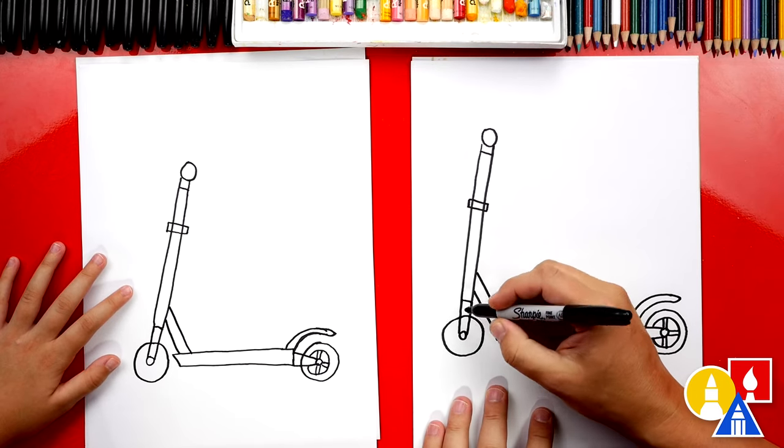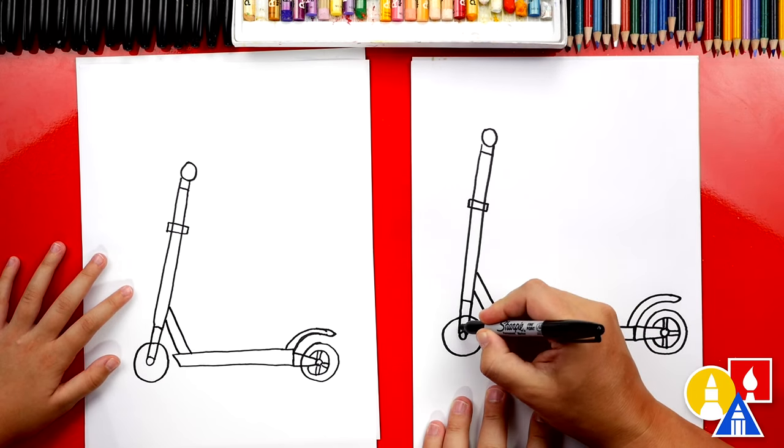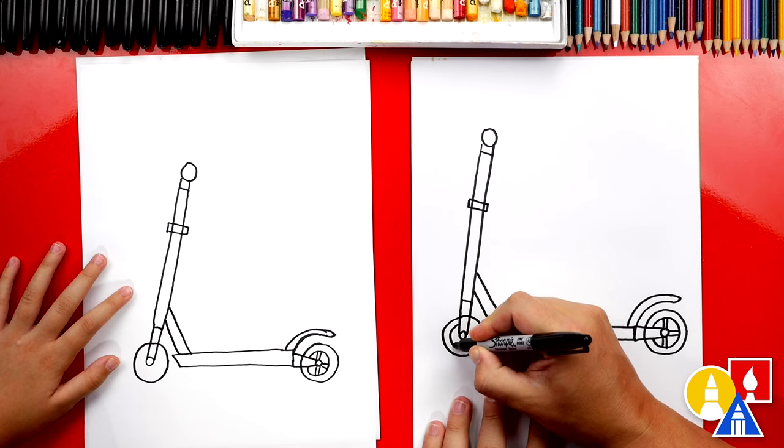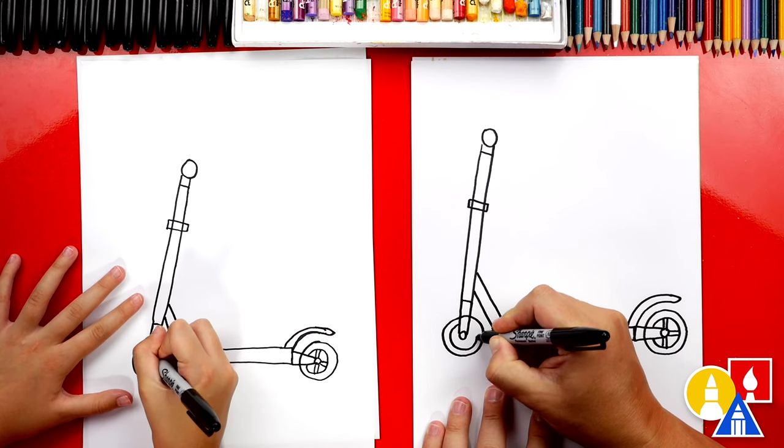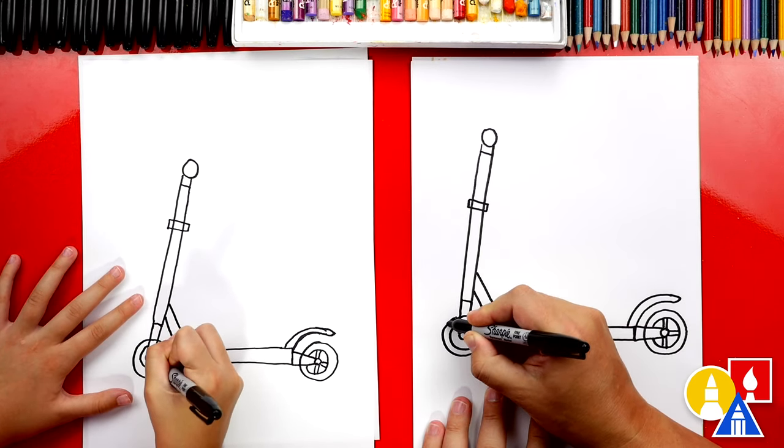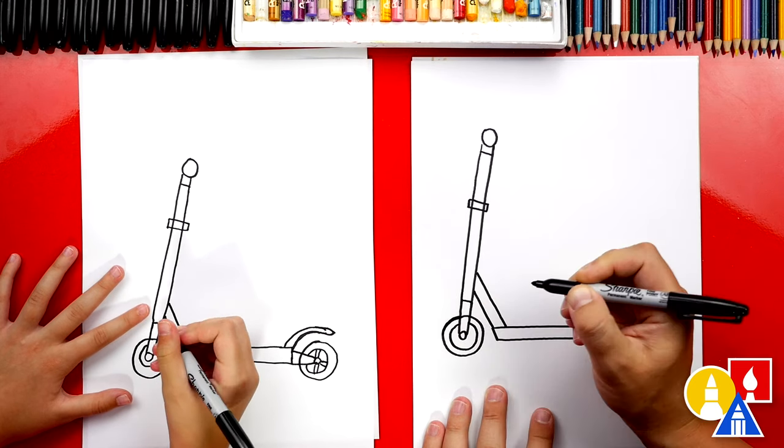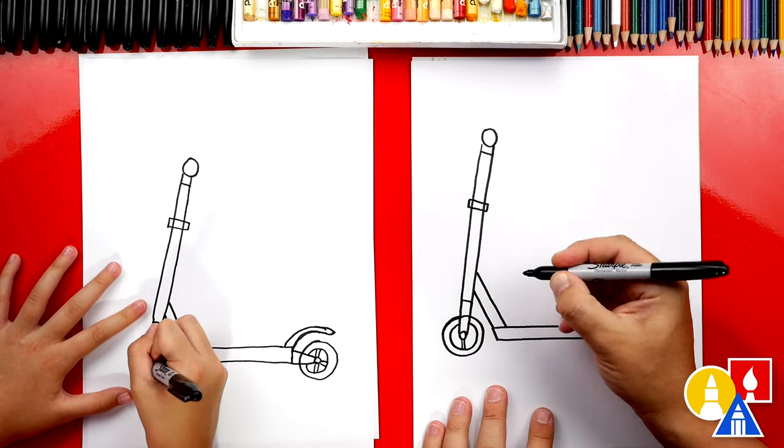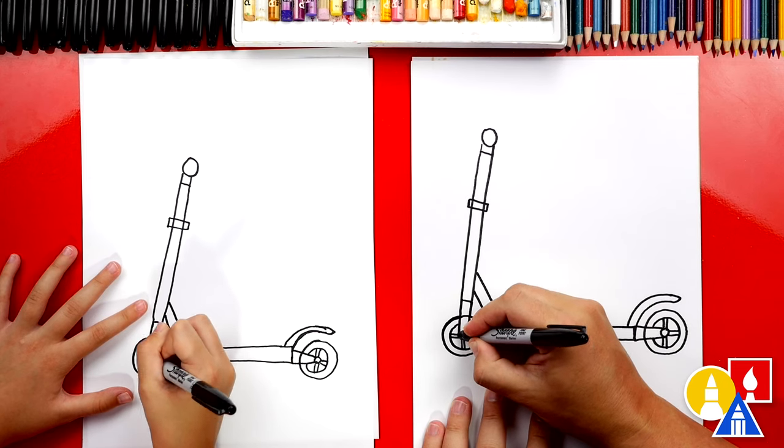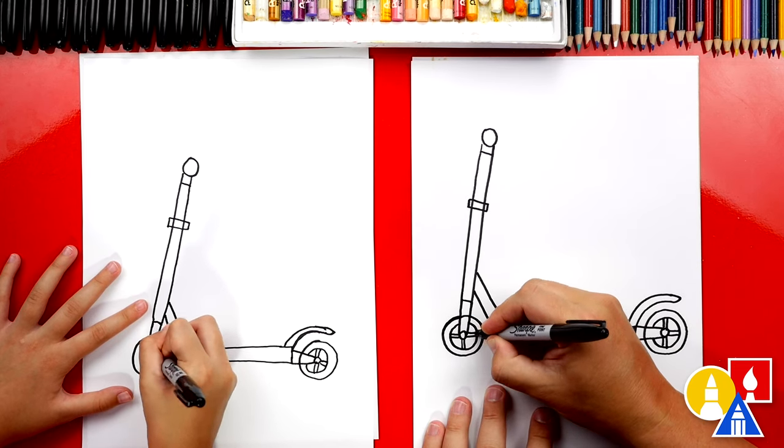Let's also add the details around the wheel. Let's do the same thing we did over here. So we're gonna first draw a part of a circle going all the way around that's close to the outside of the wheel and then we can draw two lines straight down. Two lines on the left and two lines on the right.